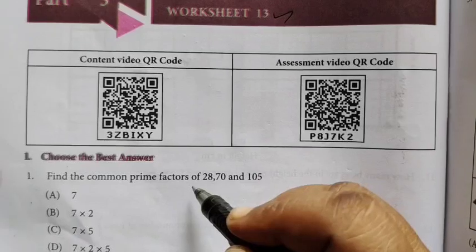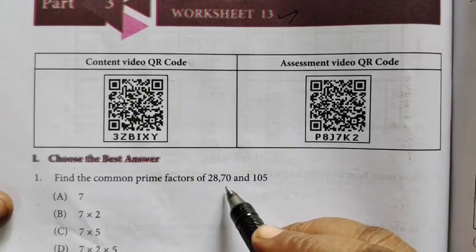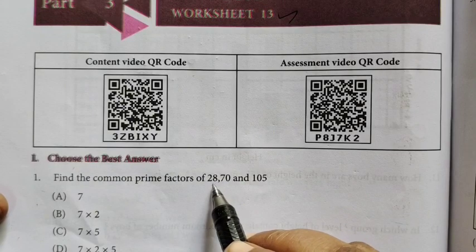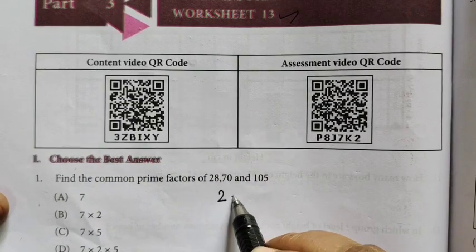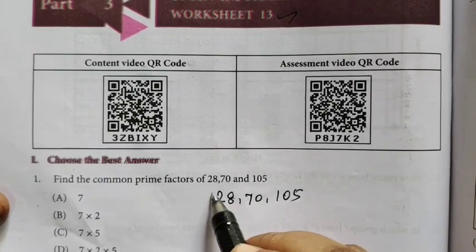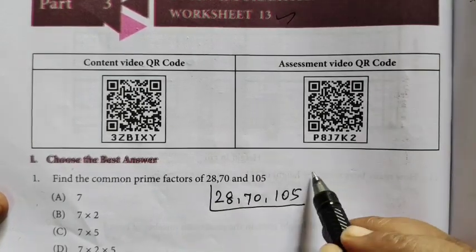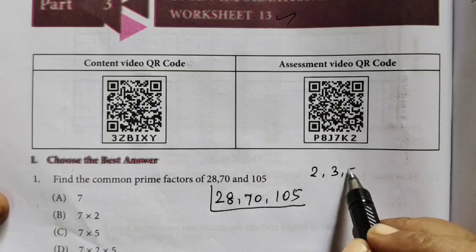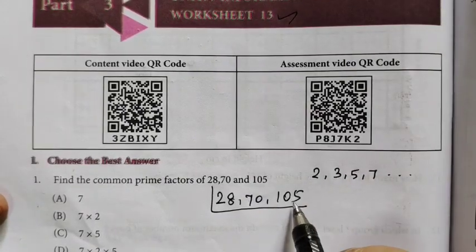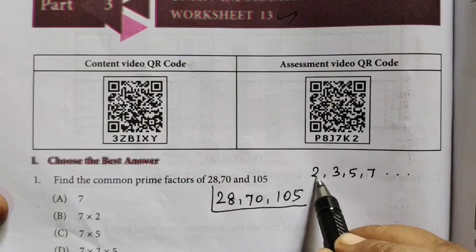Choose the best answer. Find the common prime factors of 28, 70 and 105. Prime factors will show you in this video. The common factor is 2, 3, 5, 7, etc. The common factor will show you in this video, you can write the best answer.